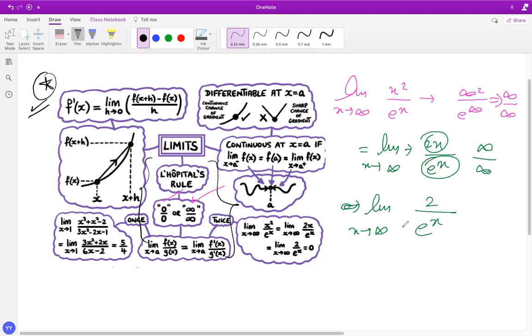Now, when I plug now x as infinity, I get, obviously, the denominator is 2 over e to the power infinity, and anything over infinity is 0. So this answer actually is coming to 0.